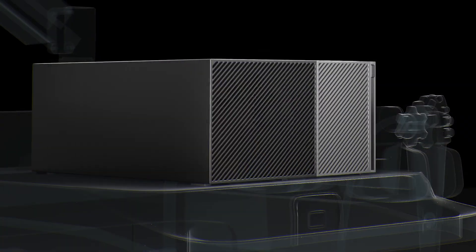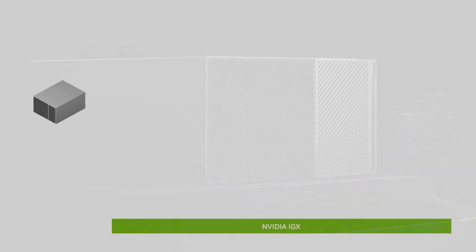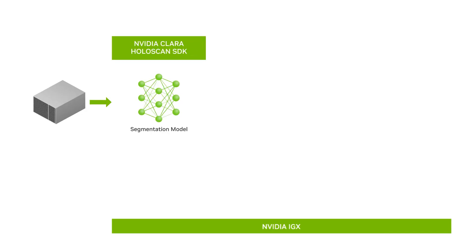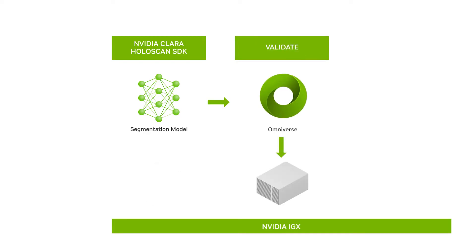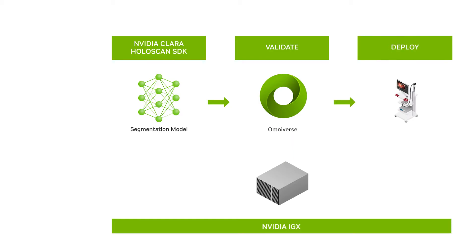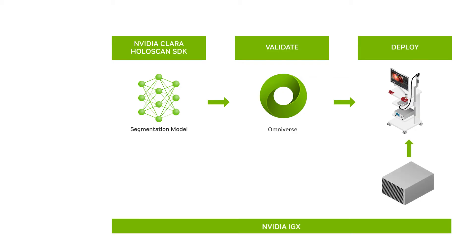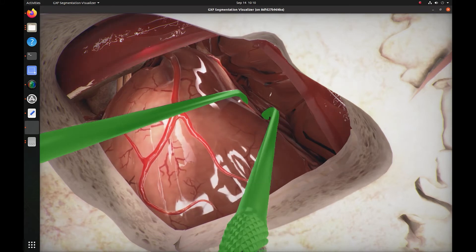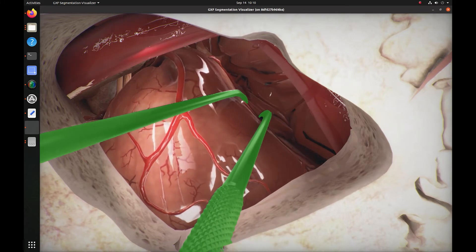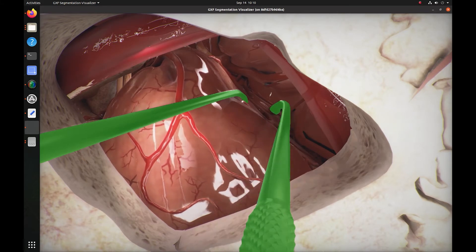We start with an NVIDIA IGX computer running the Clara HoloScan SDK, which includes a pre-trained tool segmentation model. Real-time inferencing performance is validated with virtual scenes from Omniverse. In deployment, the IGX platform has been optimized for AI processing and visualization of high-bandwidth data streams — for example, 4K, 60fps video is processed in less than 15 milliseconds.